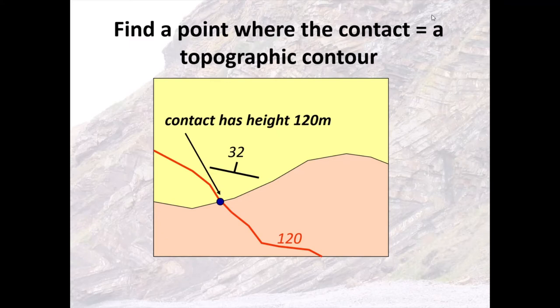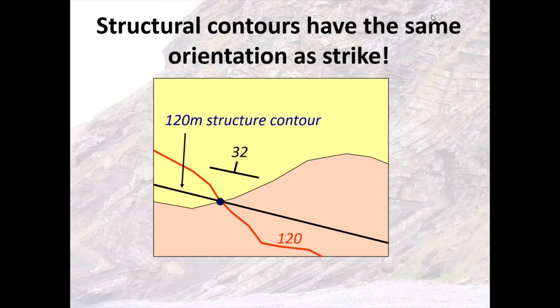What do we remember about structural contours and strike? The strike of a bed or contact is the horizontal line that you can draw across that inclined surface. So if strike is a horizontal line and a structural contour joins points of equal height, the two will be parallel. Therefore, our 120-metre structural contour will be a straight line that is parallel to strike and passes through that intersection with the topographic contour.